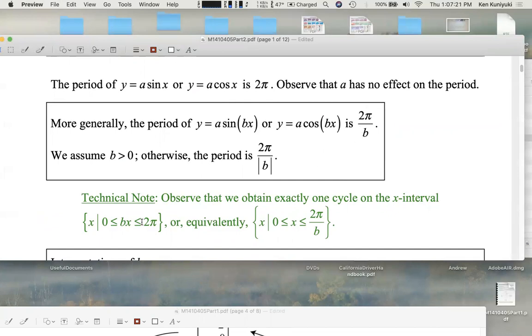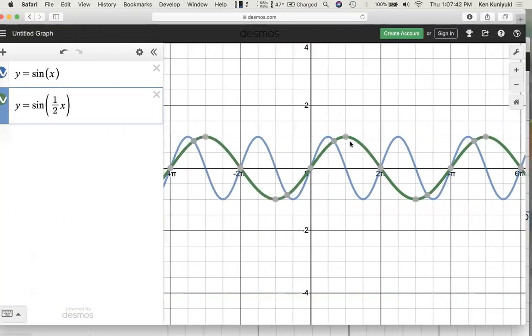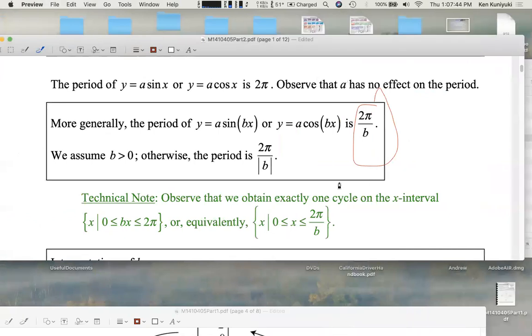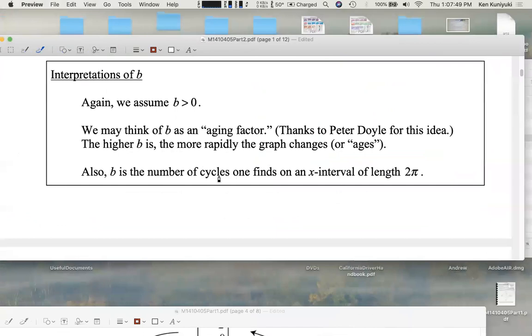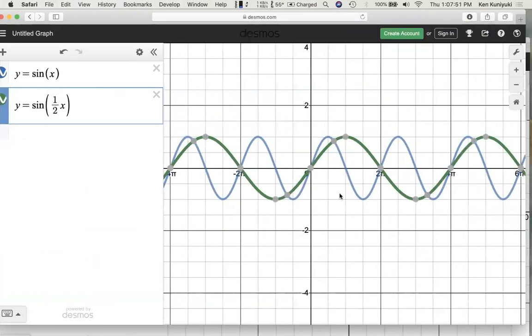We're assuming b is positive. If b is negative, or if b could be negative, then to be safe, put absolute value. But if we know b is positive, then the period is given by 2 pi over b. As b increases, the period shrinks. As b increases, the period shrinks, and we get a squeeze. Again, we can think of b as an aging factor. The higher b is, the more cycles we can fit in where we just had one cycle before.